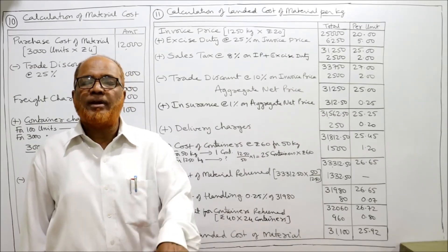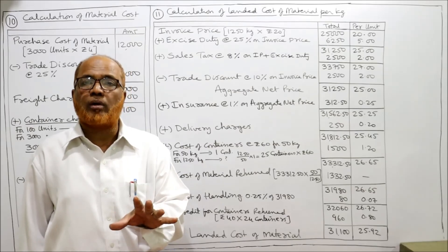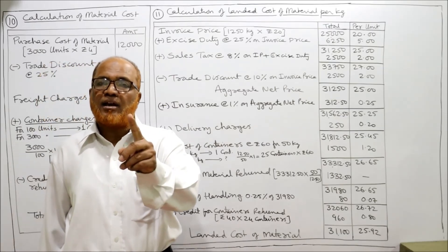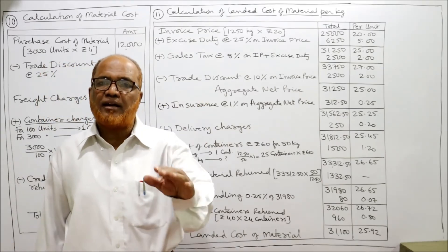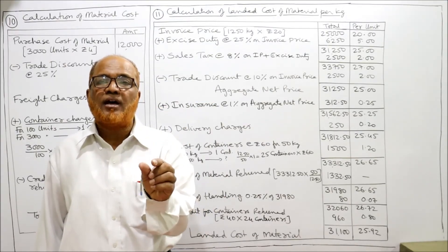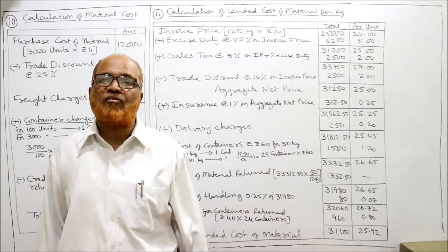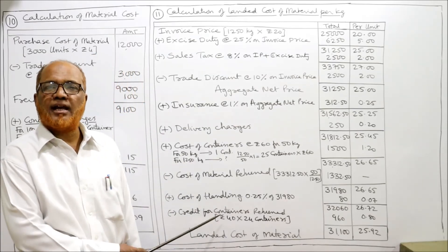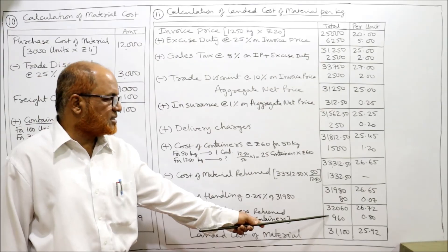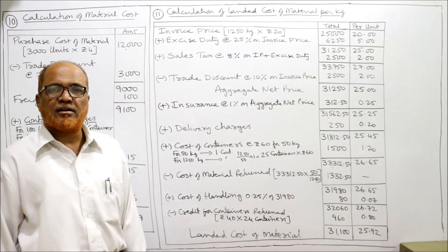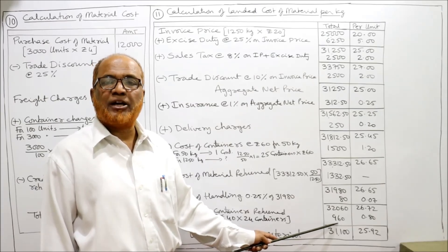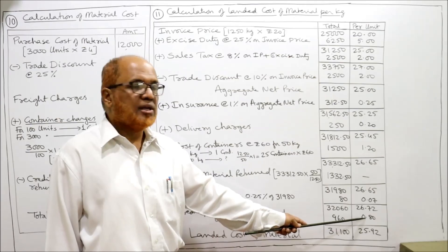Now subtract credit for containers returned. We purchased 25 containers total, but one container was already rejected, so we have 24 containers remaining. Each container gives a rebate of 40 rupees, so 24 × 40 = 960 rupees. Per kilogram: 960 ÷ 1200 = 0.80 rupees. Subtracting: 32,060 − 960 = 31,100 rupees.